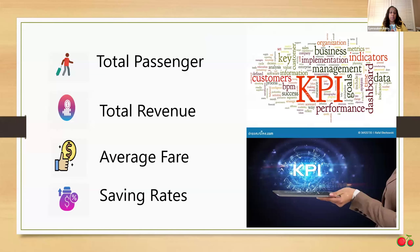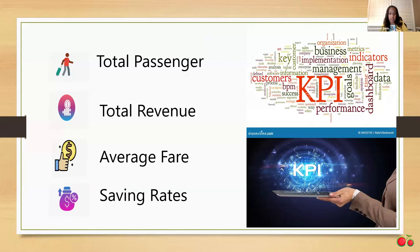These are the KPIs I used while working on my project: total passengers — the number of tickets purchased; total revenue — the amount of money generated from ticket sales; the average fare — the price a passenger pays for a flight; and the saving rate — the percentage of savings or discount applied to a total fare.